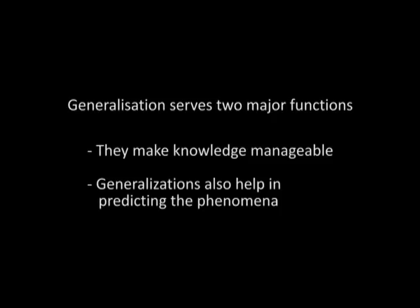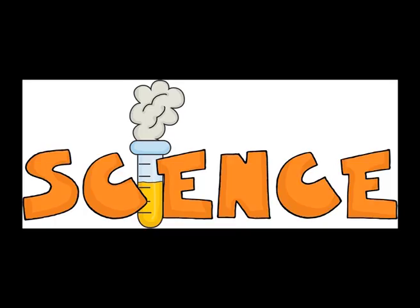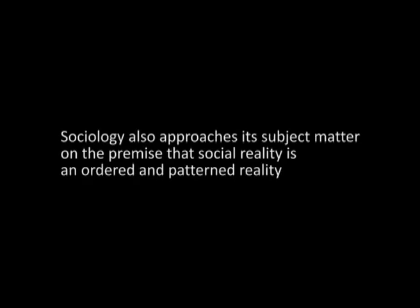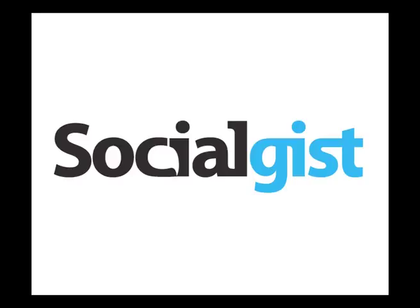If a generalization is found to be almost universally true, it may be called a law. Other terms for generalizations of varying degrees of generality include theory, thesis, or tendency statement. Generalizations serve two major functions: they make knowledge manageable, and they help in predicting phenomena. Prediction is possible because nature behaves in an ordered manner, and science aims at discovering order expressed through generalization. Sociology also approaches its subject matter on the premise that social reality is an ordered and patterned reality, though sociologists have not been able to discover laws similar to those in physical and natural sciences.